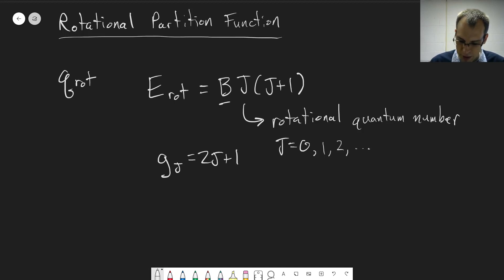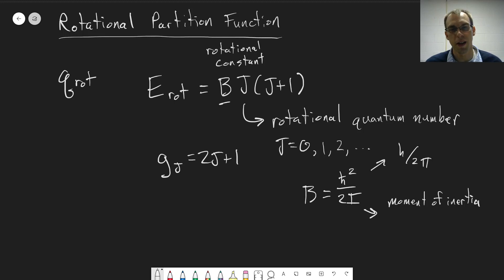What is this B value? This is what's known as the rotational constant. And it has this as a bunch of units collected together. Here, B is equal to h bar squared over 2I. h bar is Planck's constant divided by 2 pi, and I is the moment of inertia. The moment of inertia is, roughly speaking, a measure of how difficult it is to rotate an object, how heavy it is rotationally speaking.